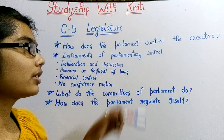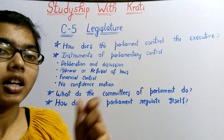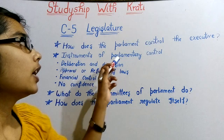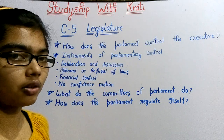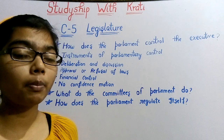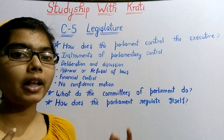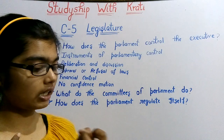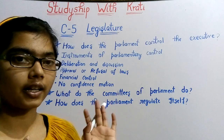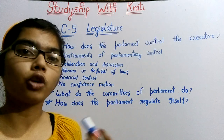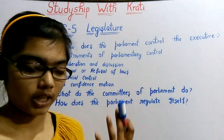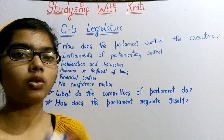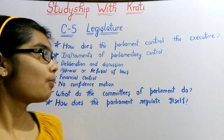Instruments of parliamentary control — Parliament controls the executive through some key points. The first is deliberation and discussion. In Parliament, everything is discussed openly. No bill is passed without debate to make it a law. It is not that all members simply agree — there are many opposition parties who are always opposed to the central government, so there is a lot of discussion.